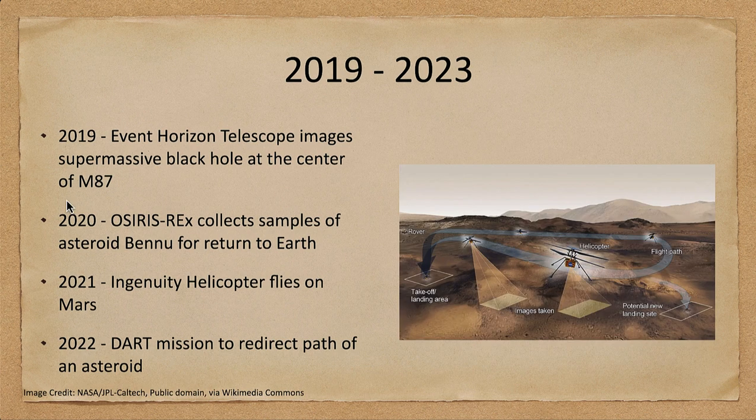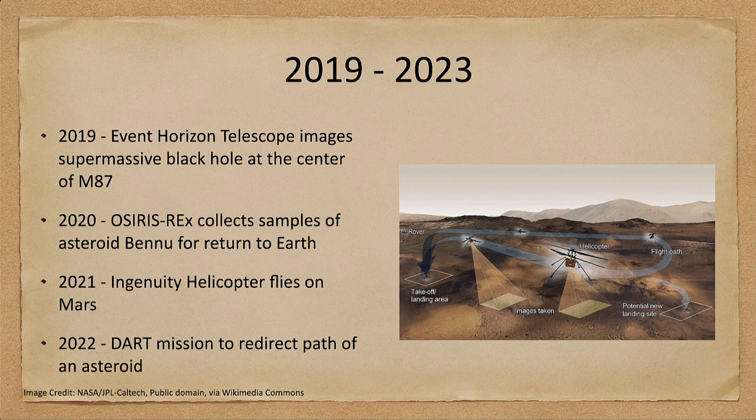In 2021, we had the Ingenuity helicopter flying on Mars, which came with the Perseverance rover. That was our first time trying to fly through the atmosphere of another world — not just landing, but actually taking off, traveling through the atmosphere, and taking images. Getting up above the ground makes travel much easier than rovers that have to worry about surface obstacles, giving us a different way to explore other worlds.